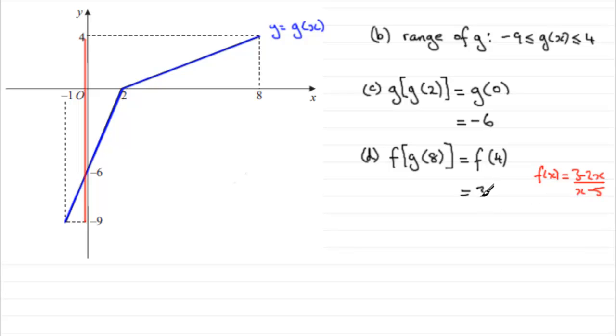So when it comes to what f of 4 is we just need to substitute x is 4 into here. So we're going to get 3 minus 2 times 4 all over 4 minus 5. And if you work that out you end up with minus 5 on the top over minus 1 which is clearly 5.